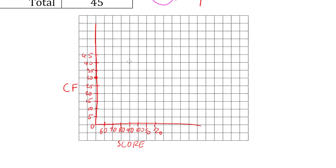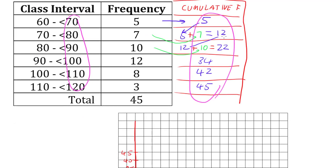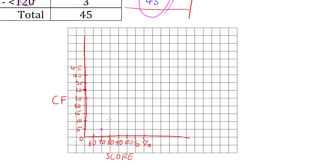So our score of 70 gives us a cumulative frequency of 5, and we just put a dot. Then 80 goes to 12, so 80 goes to 12, and we put a dot.